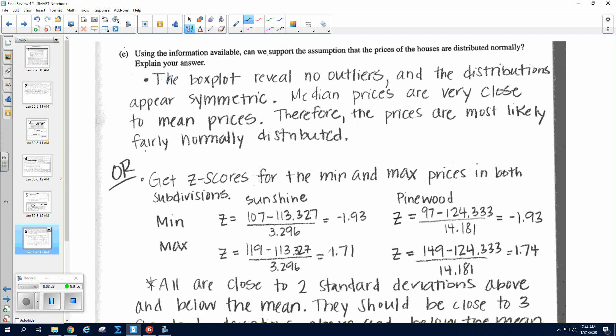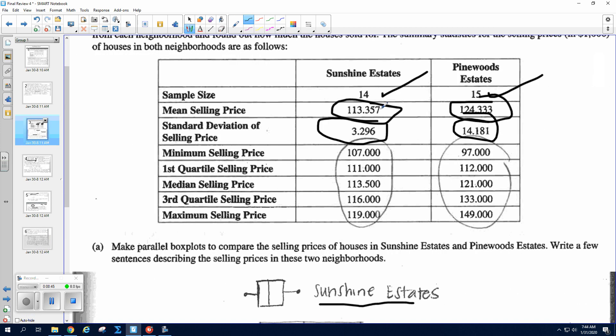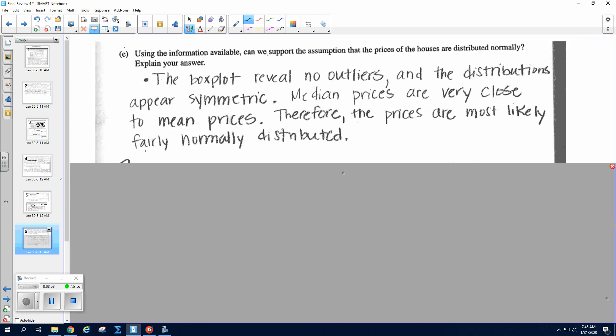So this one has a couple ways that you could answer the question. So one way is to look at the shapes of the graph. So the box plot has no outliers; the distributions are roughly symmetric. Another thing that's interesting is the medians are close to the mean. So if you look back at the data, here's the mean, here's the median—those are really close. Here's the mean, here's the median—those are fairly close. All right, so that indicates symmetry. Therefore, the prices are most likely fairly normally distributed. So that's one way to argue.